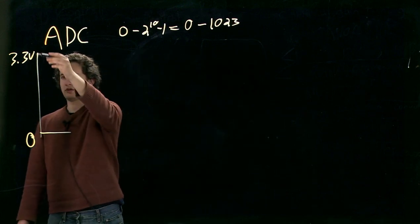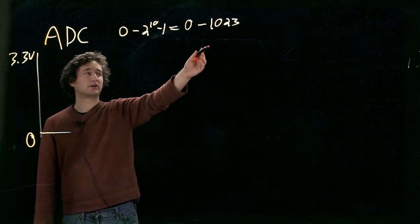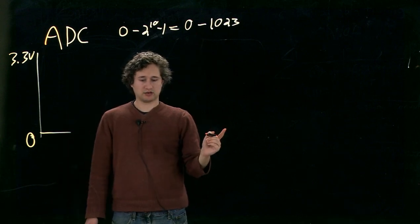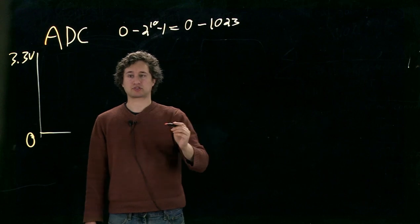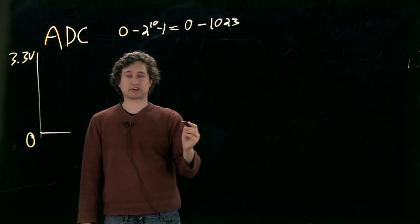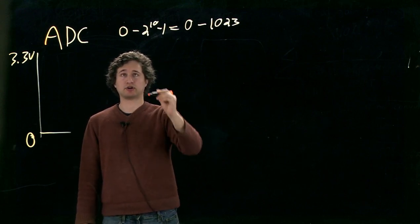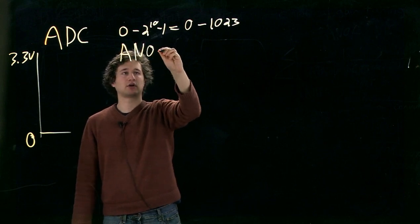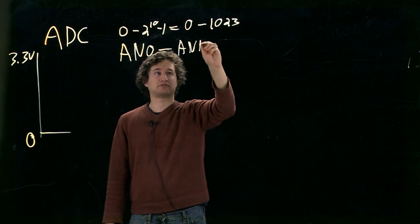So a voltage in between here is converted between 0 and 1023. There's one ADC on the PIC, but there's actually 16 pins that are capable of doing analog input, labeled AN0 to AN15.